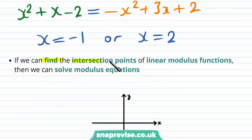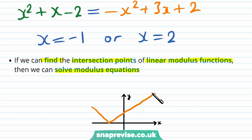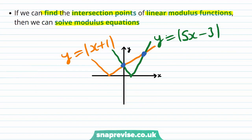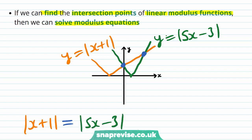If we can find the intersection points of linear modulus functions, then we can solve modulus equations. Let's say we have the graph of y equals the modulus of x plus 1, and the graph of y equals the modulus of 5x minus 3. If we wish to locate the intersection points, then we need to solve the equation modulus of x plus 1 equals modulus of 5x minus 3. When we do this, we find that we get x equals 1 or x equals 1.